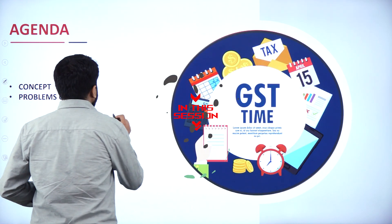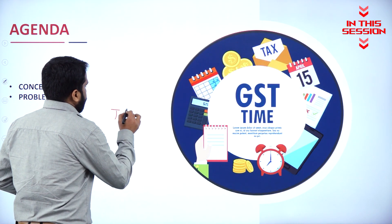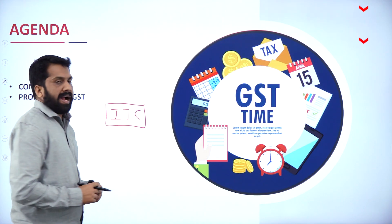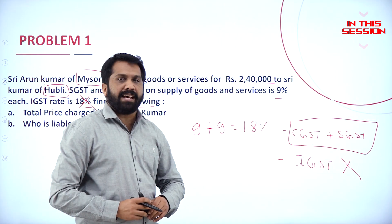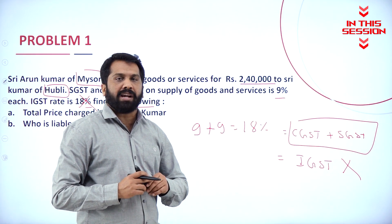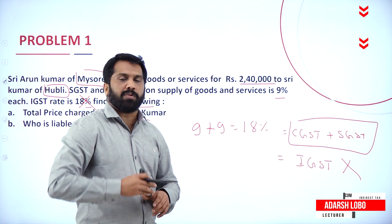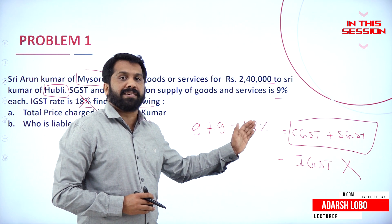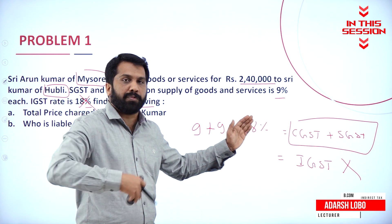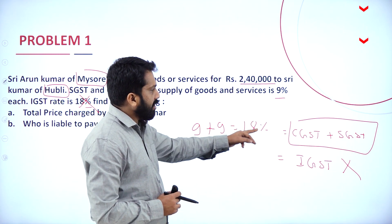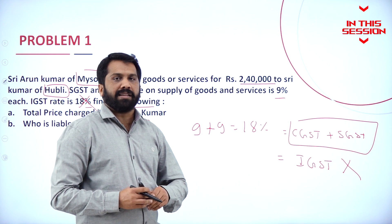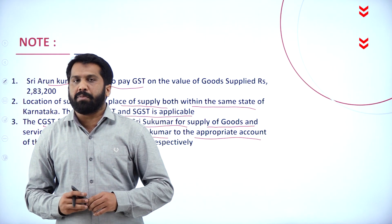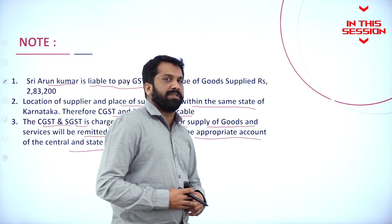What is your ITC? ITC we call it as input tax credit. Any sale or transaction that happens within the state, we call it as intra-state. In this case, CGST and SGST will be calculated. CGST means central government, SGST means state government.